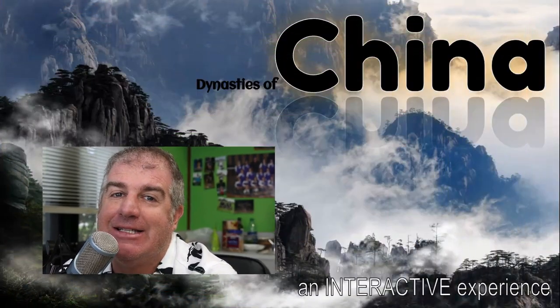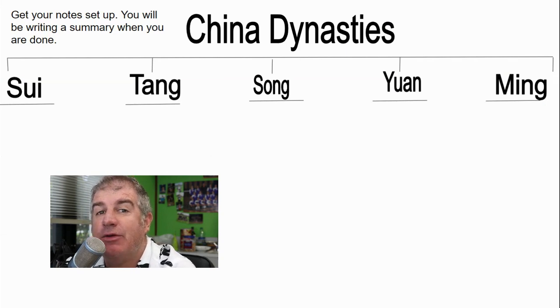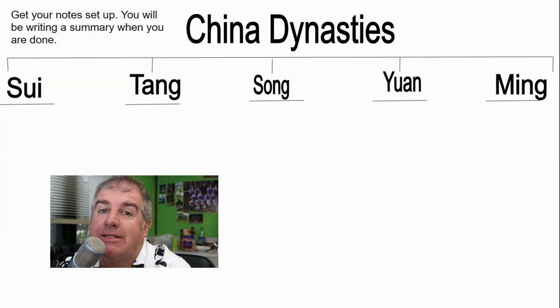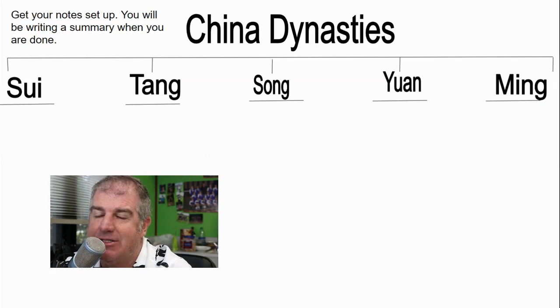All right guys, let's take a look at China. You might have studied China a little bit in sixth grade. We're gonna go on from that and really focus on about five of the dynasties. So let's jump right into it. These are the dynasties we want you to focus on: the Sui, the Tang, the Song, the Yuan, and the Ming dynasty.